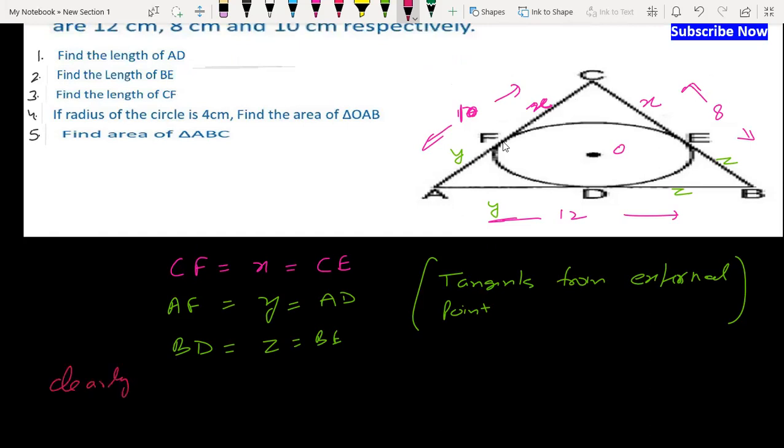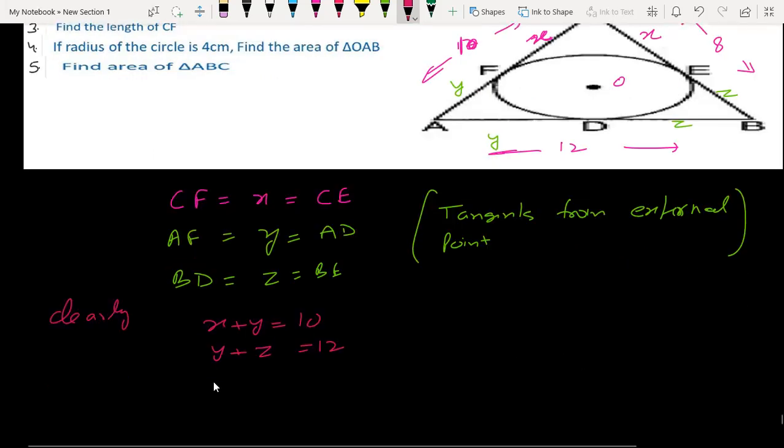So clearly, AC is 10, so x plus y is 10. AB is 12, so y plus z is equal to 12. And BC is x plus z equal to 8.